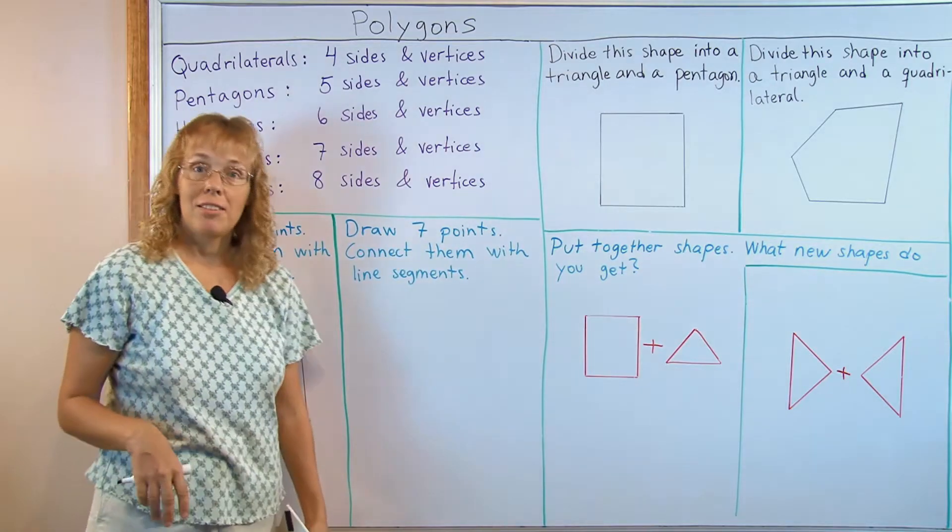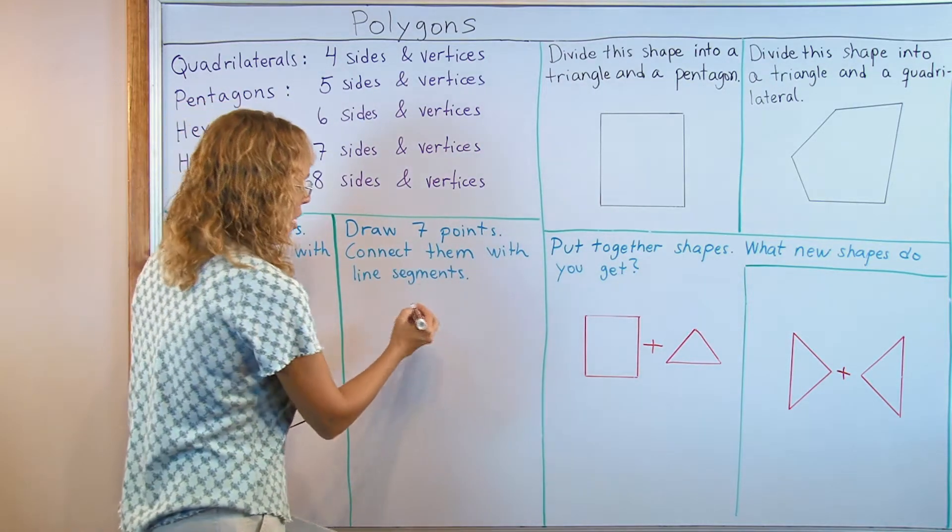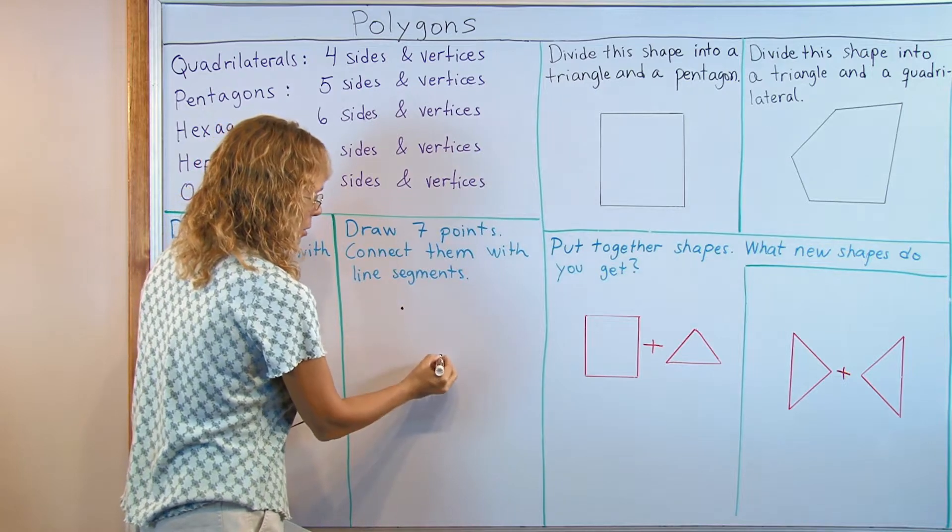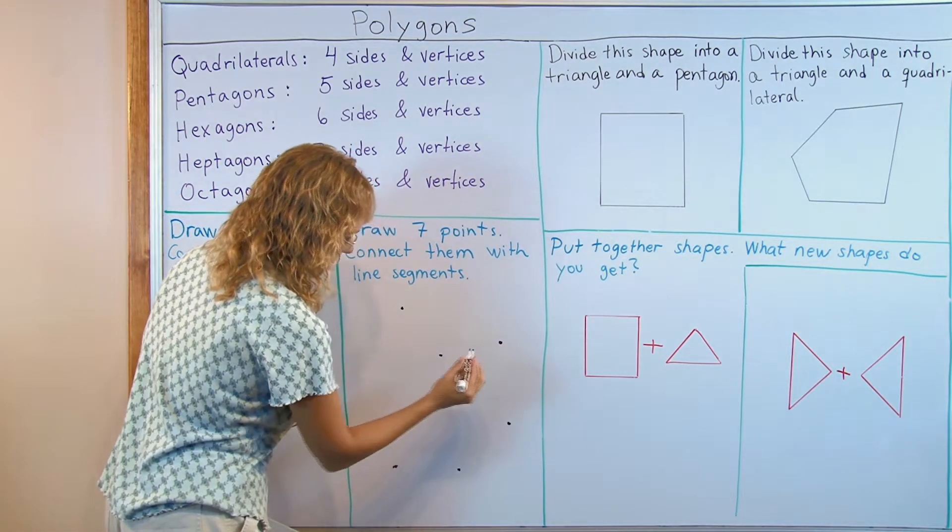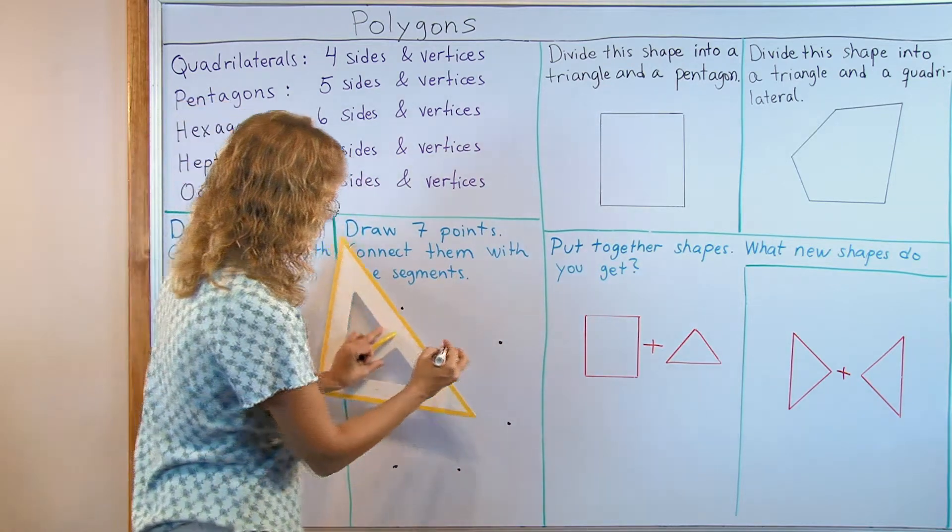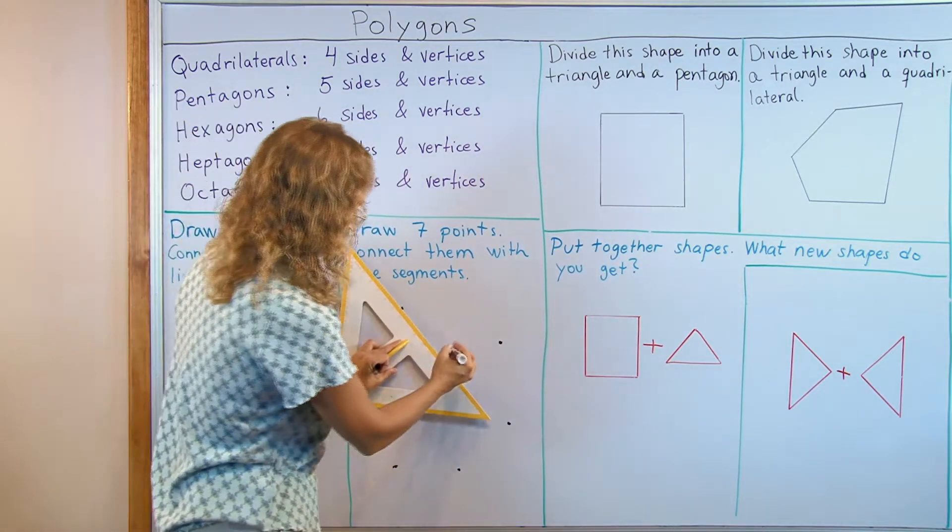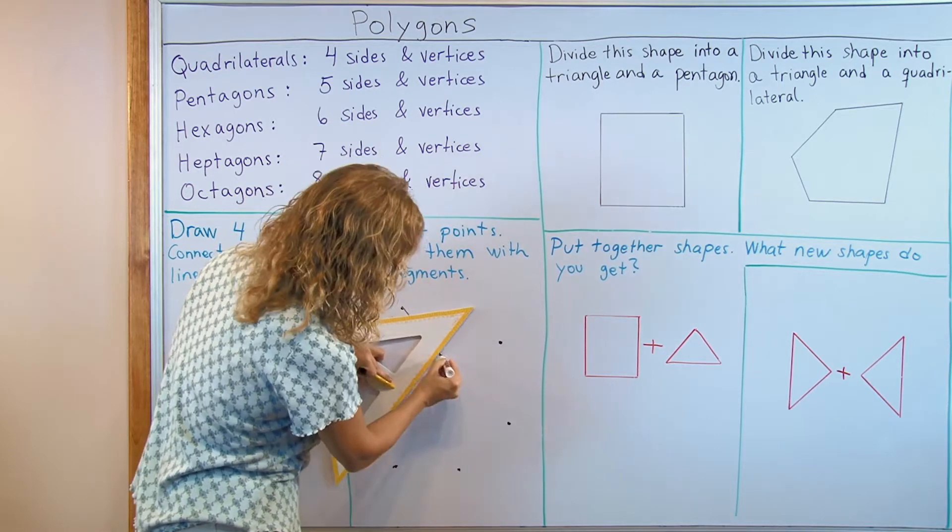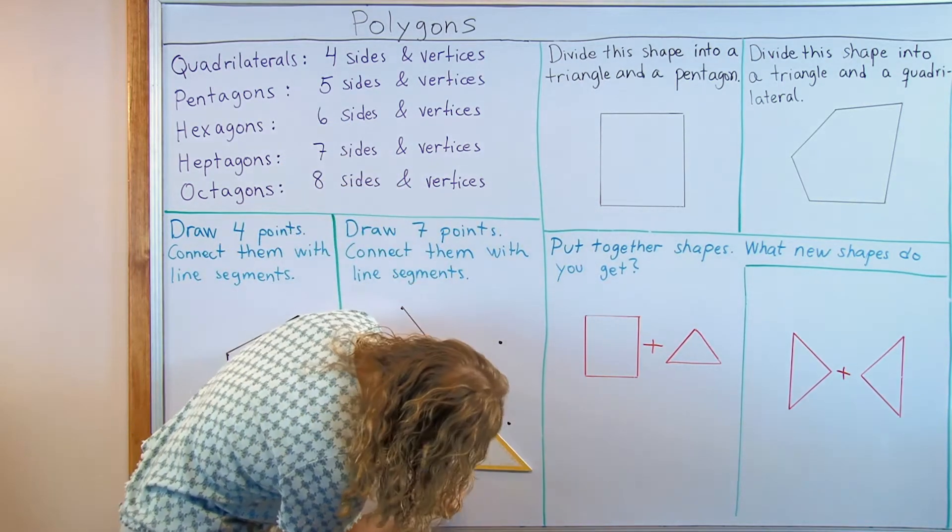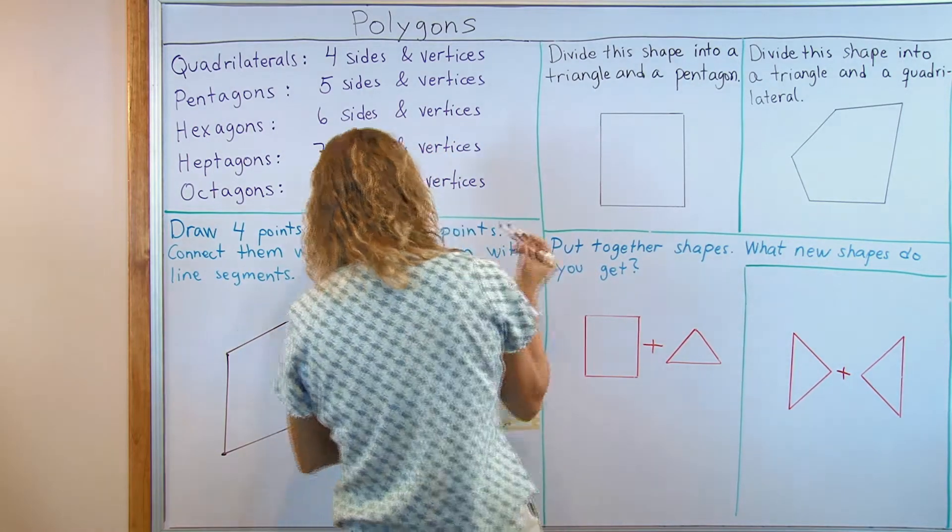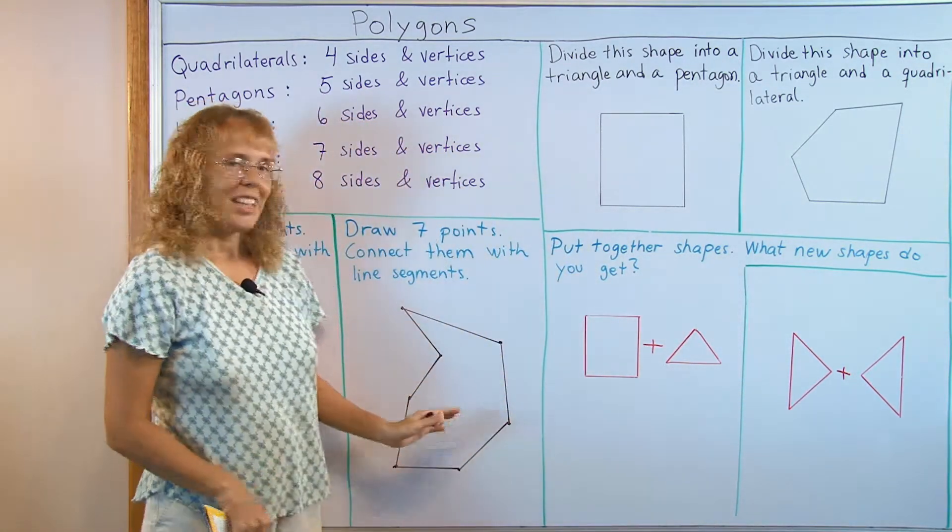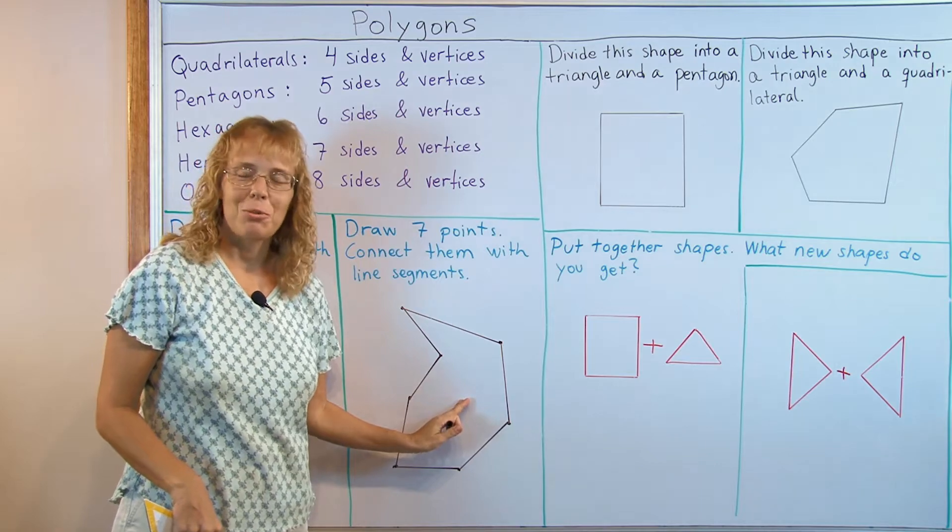Let's try that with seven points. Children are allowed to draw the points anywhere they want, and seven, and then connect them. There, perfectly done the heptagon wouldn't you say.